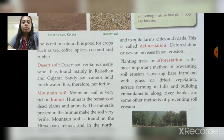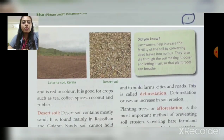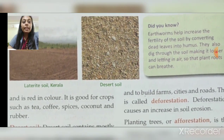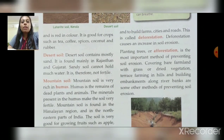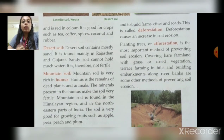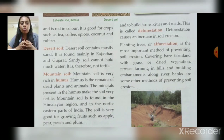Next is desert soil. Desert soil contains mostly sand and is found mainly in Rajasthan and Gujarat. Rajasthan has a large desert area. Sandy soil cannot hold much water and is therefore not fertile.